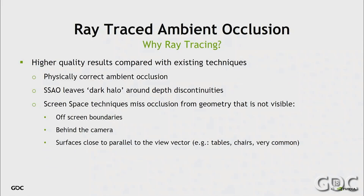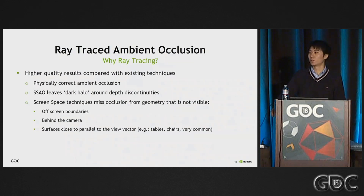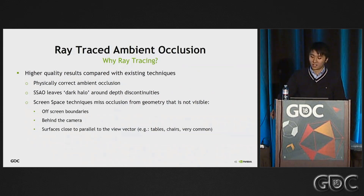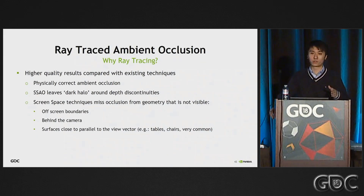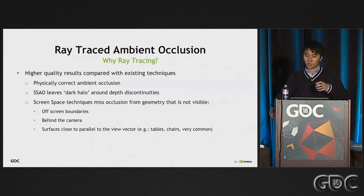For AO, there are people who use screen space techniques. Screen space techniques like SSAO just darken the corners and edges, and they also tend to leave a dark halo around object borders. They also fill the viewport boundaries and cannot handle occlusion from off-screen geometry, or in-screen geometry that is occluded.